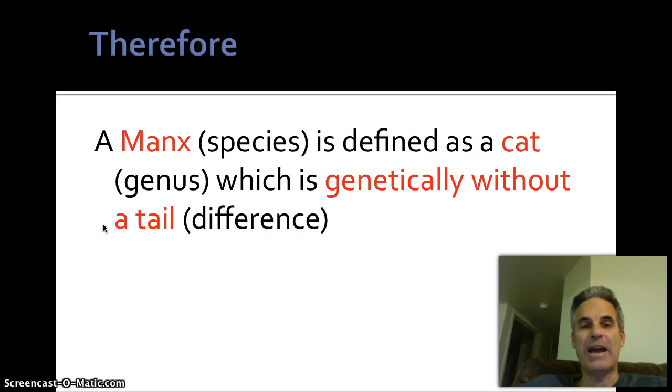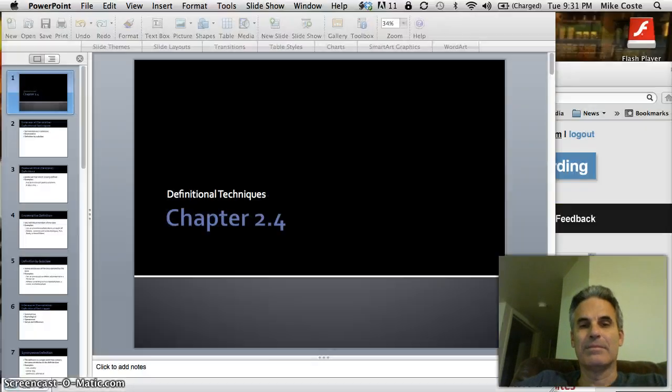And so now we've looked at four different intentional techniques, which are synonymous, operational, genus and difference, and etymological. And we looked at three different extensional techniques, which are demonstrative or ostensive, subclass, and enumerative. And so what we want to do is be able to take these and look at definitions and be able to determine what they are. So hopefully this has helped in that endeavor. Let me know. Thank you.